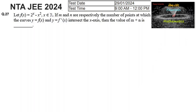Let f(x) = 2^x - x², where x is a real number. If m and n are respectively the number of points at which the curves y = f(x) and y = f'(x) intersect the x-axis, then find the value of m plus n.